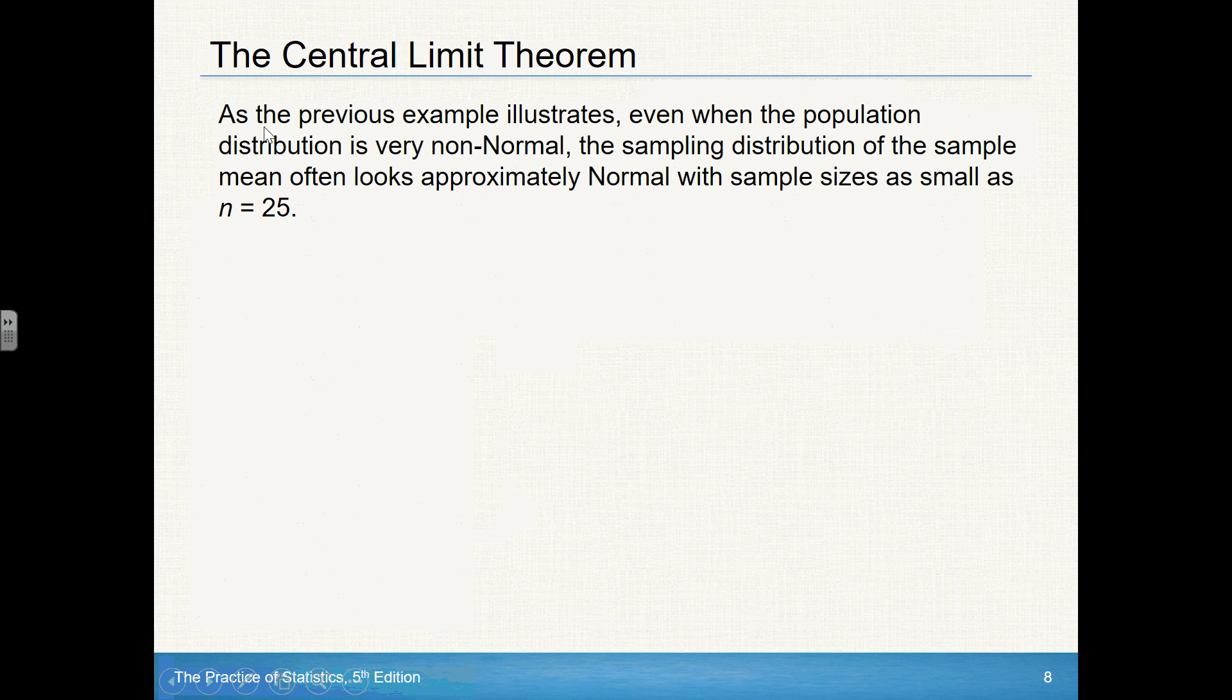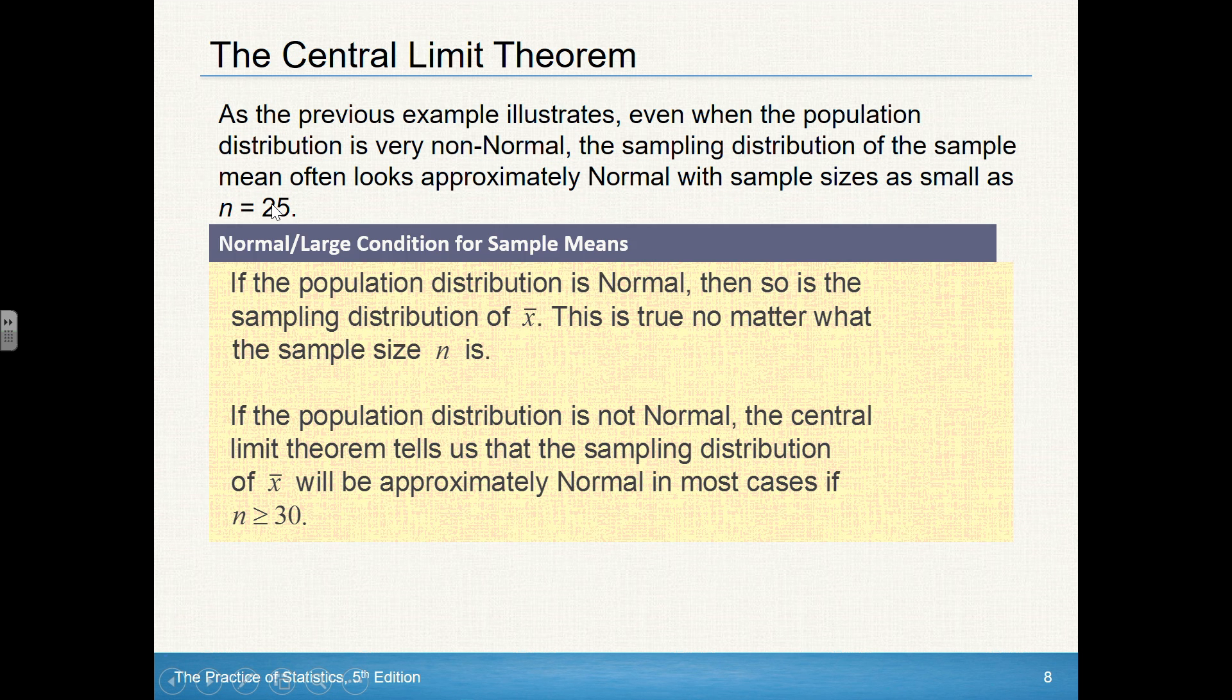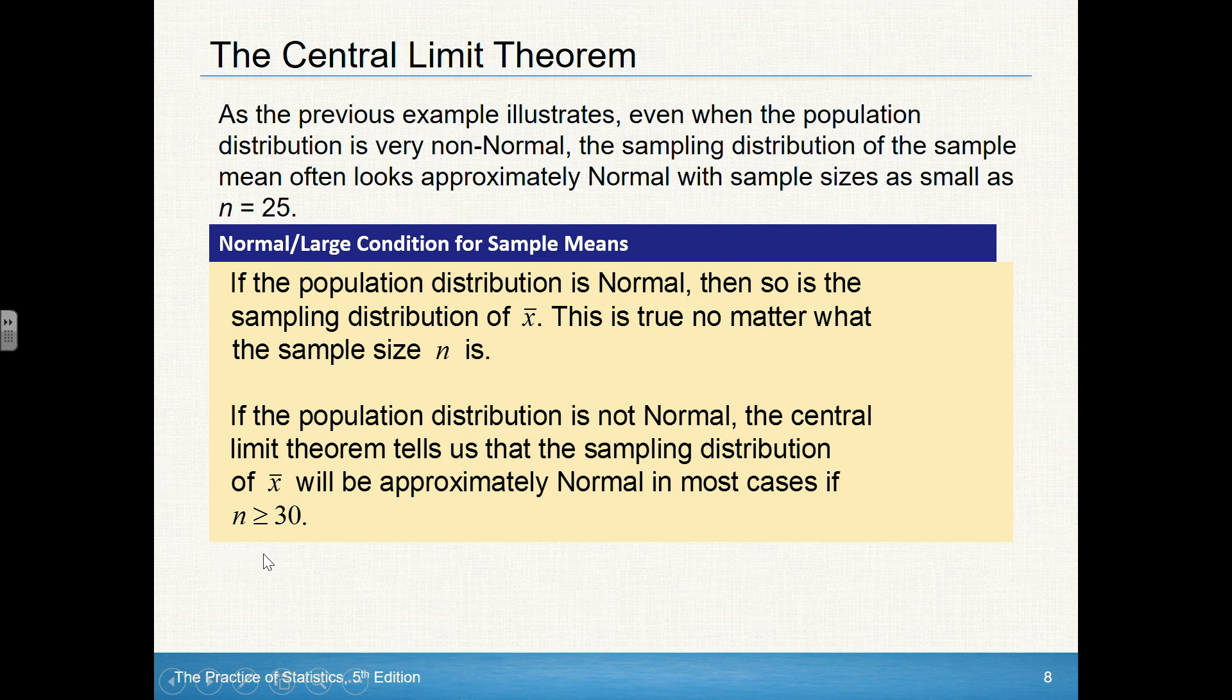Now, it says in the previous example illustrates, even when the population is very non-normal, sampling distribution of the sample often looks approximately normal. They say with sample sizes as small as 25. Generally speaking, we're going to keep it to 30, because that's just the more traditional sense there, because some distributions are really, really skewed. So we're going to be a little bit more conservative and stick to this 30 value here.